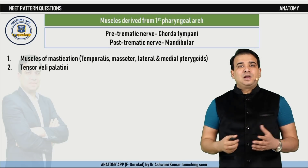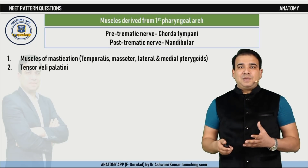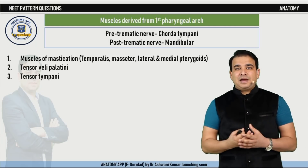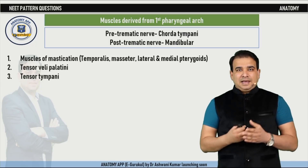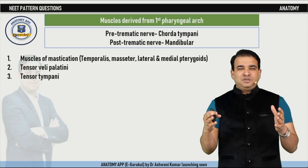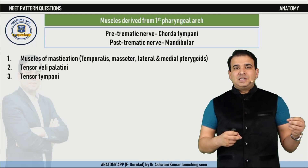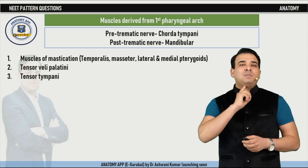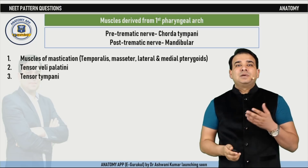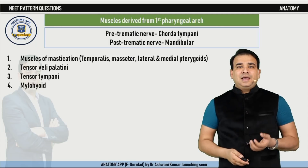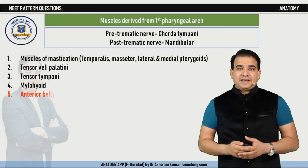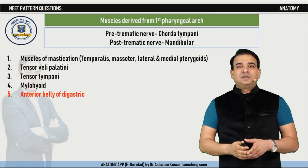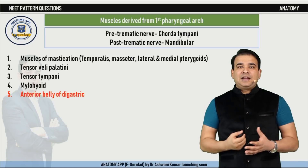All the muscles of mastication are muscles of the first pharyngeal arch. The two tensor muscles — tensor veli palatini and tensor tympani — are also first arch muscles because they are supplied by the trunk of the mandibular nerve. When the mandibular nerve divides into anterior and posterior divisions, the inferior alveolar nerve from the posterior division gives off the nerve to mylohyoid, which supplies the mylohyoid and the anterior belly of the digastric. All these muscles, being supplied by the mandibular nerve, are derived from the first arch.